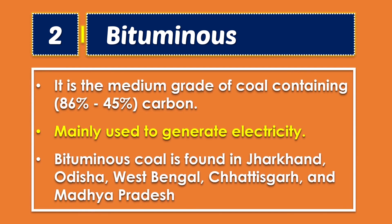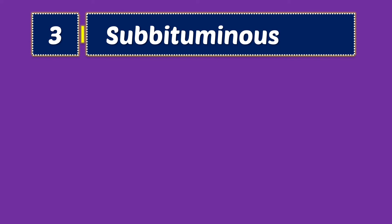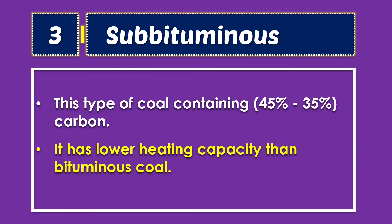Bituminous is the medium grade of coal, containing 45% to 86% carbon, and is mainly used to generate electricity. Bituminous coal is found in Jharkhand, Orissa, West Bengal, Chhattisgarh, and Madhya Pradesh. Sub-bituminous coal contains 35% to 45% carbon and has a lower heating capacity than bituminous coal.